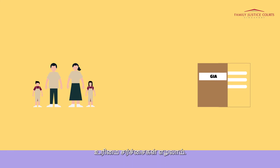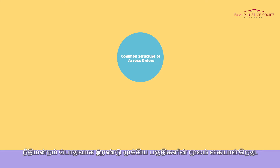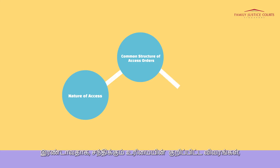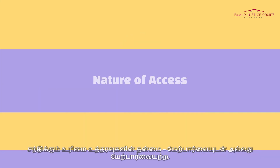Main Aspects of Access. When dealing with issues of access, the court generally addresses it through two main areas. First, the nature of access, specifically whether access is supervised or unsupervised. Second, the specific particulars of access, broadly dealt with in terms of the duration and extent of access. The nature of access orders: supervised or unsupervised.